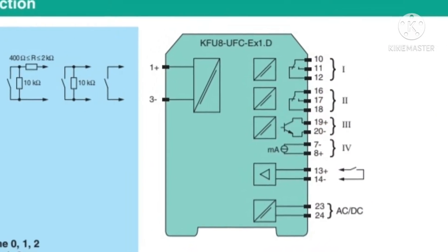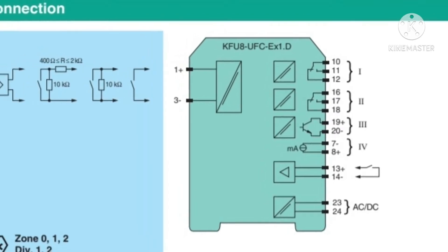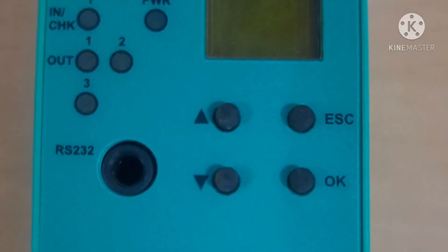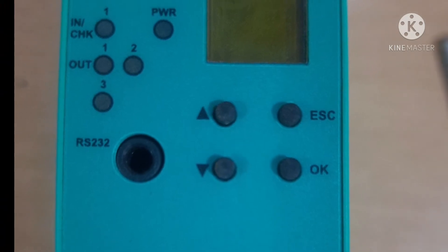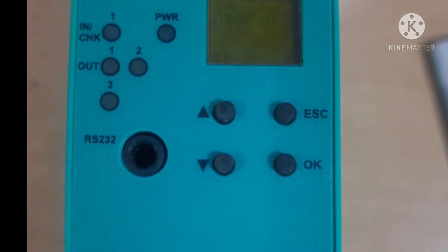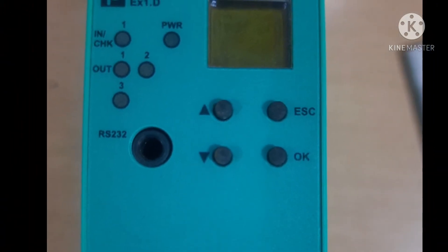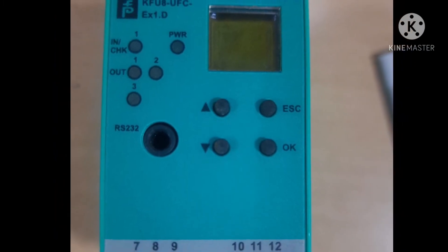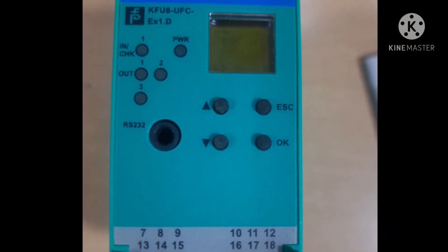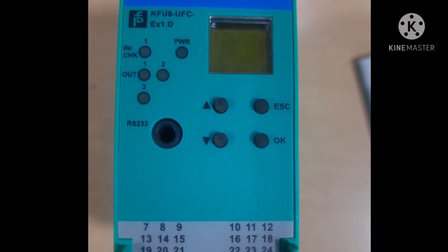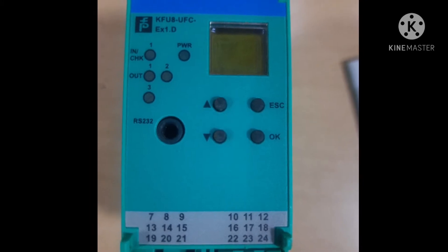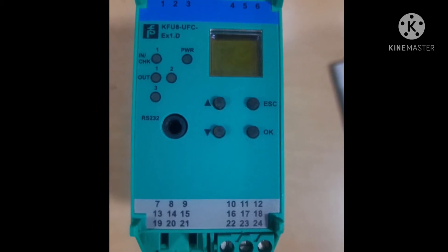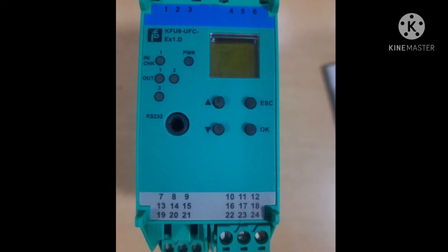Now do all connections as per your drawings. Now it's time for programming, so let's start. On the front of the device you can see 4 different types of buttons: up and down buttons, and escape and OK buttons. Up and down buttons are used for raising and lowering the value of speed. OK button is used for next and escape is used for back.